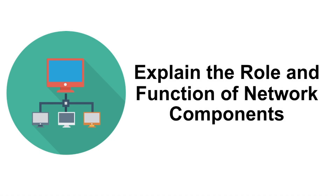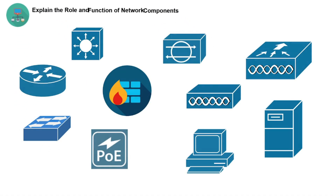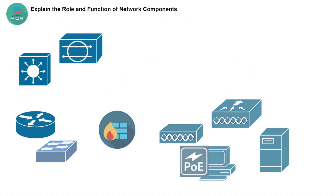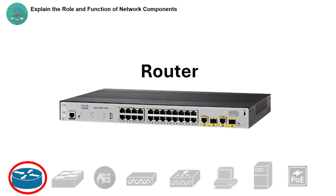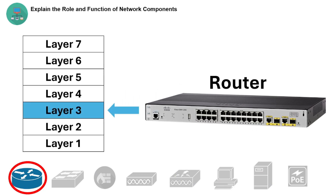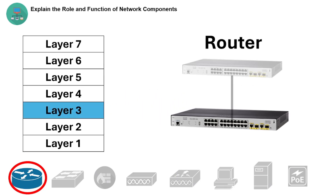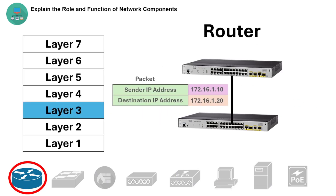Let's explain the role and function of network components. Starting with a router: a router is a layer 3 device used to connect multiple networks together and route packets between them based on IP address.